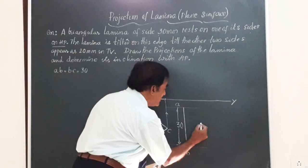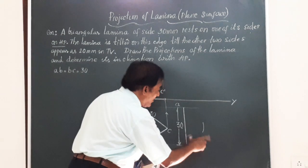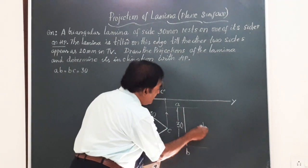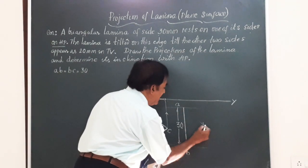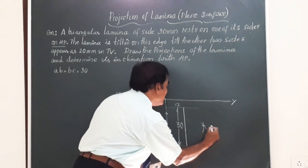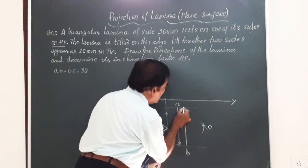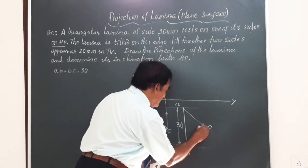A as center, 20 mm radius, I will draw another arc. These two will meet at C. Join A to C and then B to C.